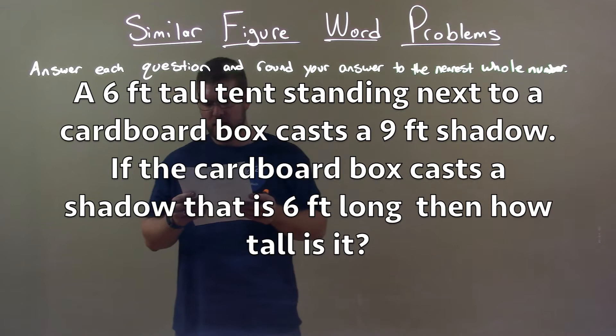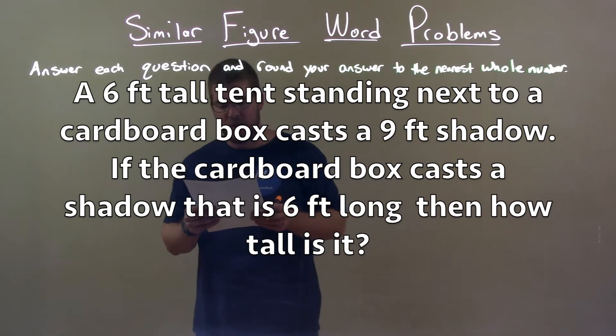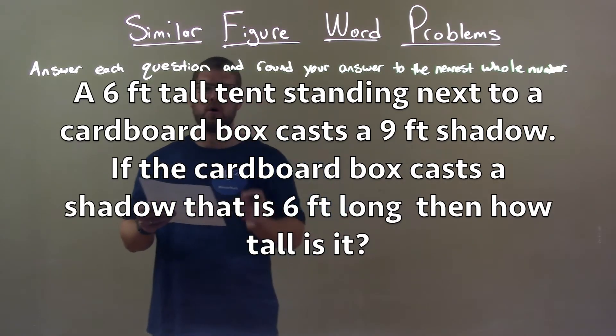A six foot tall tent standing next to a cardboard box casts a nine foot shadow. If the cardboard box casts a shadow that is six feet long, then how tall is it?